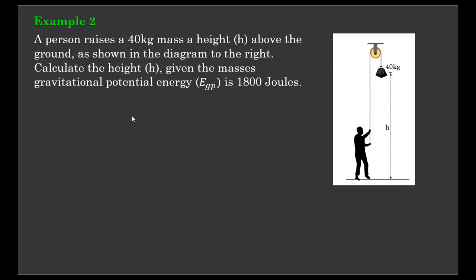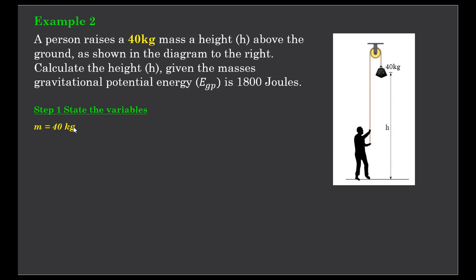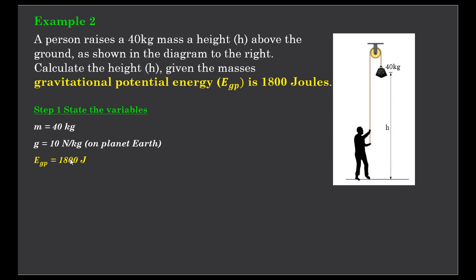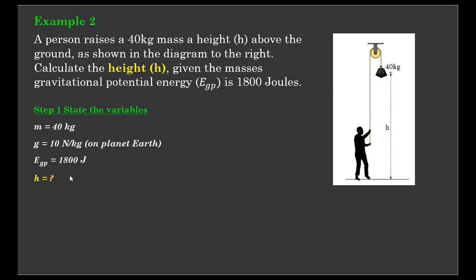Example number two: a person raises a 40 kilogram mass to a height H above the ground as shown in the diagram. This time we don't know what the height is. We want to calculate the height that would give the mass a gravitational potential energy of 1800 joules. So let's state the variables: mass is 40 kilograms, gravitational field strength is 10 newtons per kilogram, total gravitational potential energy is 1800 joules, and we need to find the height.